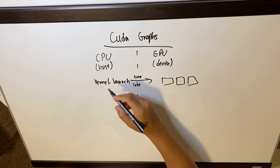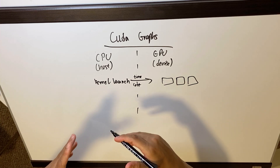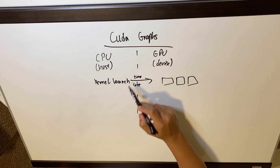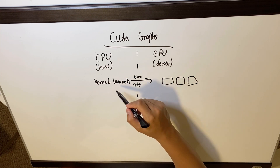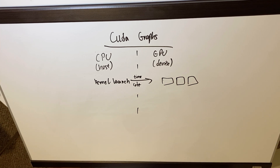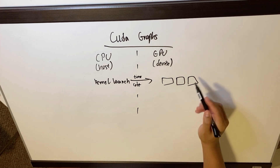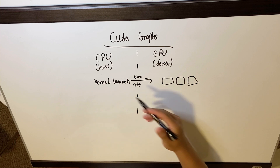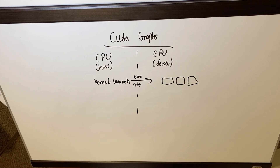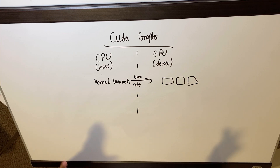Whatever big processing you have to do takes place on the GPU side, but this represents a time cost. In order to initialize, set up, and prepare a kernel launch, there is a certain amount of latency — a certain amount of time it takes the CPU to initialize a kernel launch on the GPU. If it's just one launch, it's not too bad depending on how time-consuming and complex your actual parallel processing is.